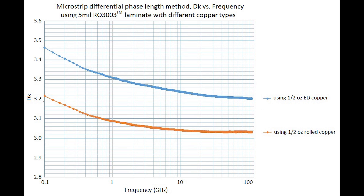The ED copper is slowing the wave velocity, and any circuit with a slowed wave velocity will report a higher dielectric constant, even though the underlying material has the same dielectric constant. In the case of circuits using the very smooth rolled copper, the dielectric constant curve approaches the intrinsic value of the material — approaching 3.0 — because even though the circuit is very thin and sensitive to copper surface roughness, the rolled copper is so smooth that it's not impacting the propagation constant. So the circuit is reporting nearly the intrinsic or bulk Dk of the substrate.